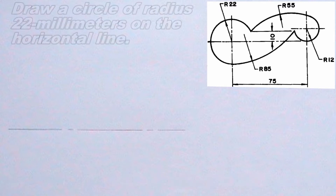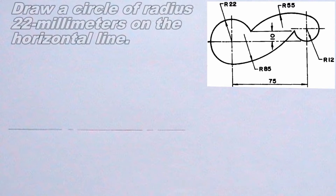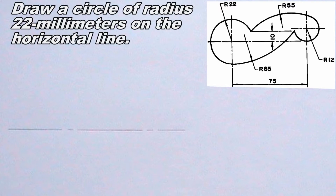The next thing I will do is to draw a circle on the horizontal line. The radius of the circle should be 22mm.